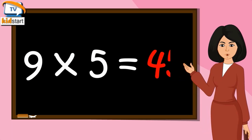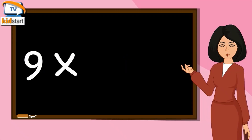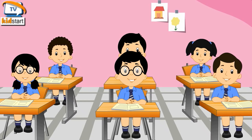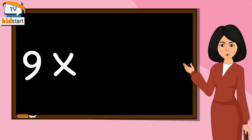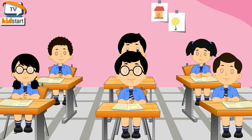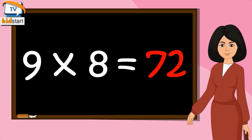Nine fives are forty-five, nine sixes are fifty-four, nine sevens are sixty-three, nine eights are seventy-two.